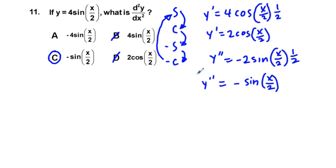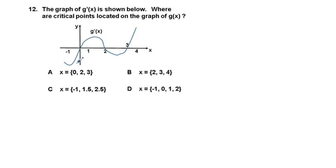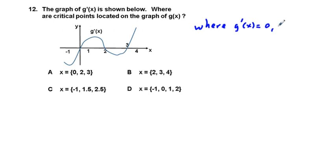Problem 12: the graph shown is of g′(x). Critical points on g(x) occur where g′(x) = 0 or is undefined. Reading the graph, g′ equals zero at approximately x = 0, x = 2, and x = 3. The correct answer is A.